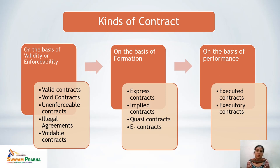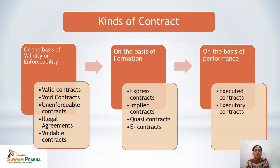The second category of contracts is on the basis of formation. Express contracts are those stated in words, either spoken or written. For example, Mr. A says to Mr. B that he wants to sell his car and Mr. B accepts. Whether in written or spoken form, this is an express contract.